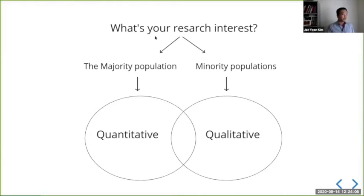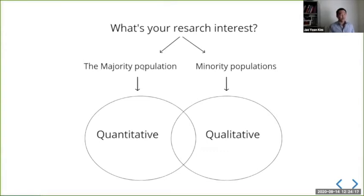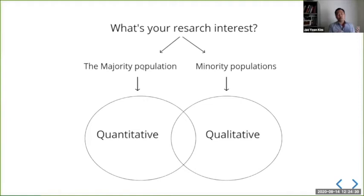Let's say your research interest is the majority population in the United States and their public opinion — studying political polarization in the U.S. and how that's dividing Republicans and Democrats. If that's your research question, one way to answer it is using available panel data, like the American National Election Study. You can download that data set, do some modeling, and make inferences about that population.